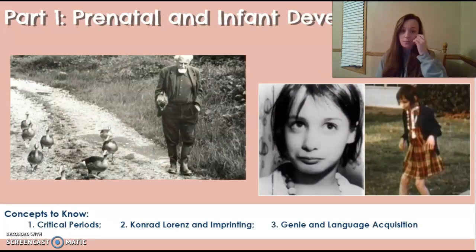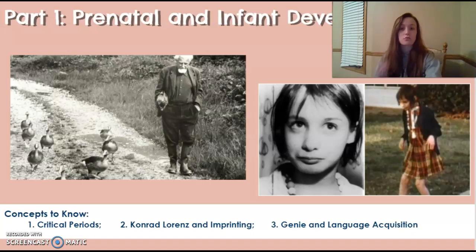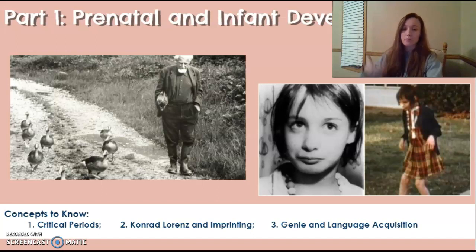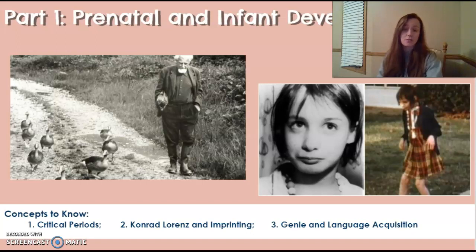Critical periods are times when a child is especially sensitive to learning or acquiring a particular skill and must be exposed to that stimulus during that sensitive window. One example is imprinting, an animal critical period studied by Konrad Lorenz. He discovered that within the first 24 hours of a duckling or gosling's birth, whatever they first see, they attach to as their mother — so these ducks and geese would attach to him if he was the first thing they saw.